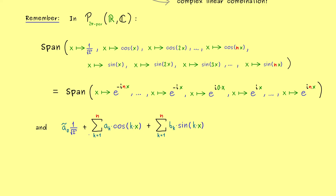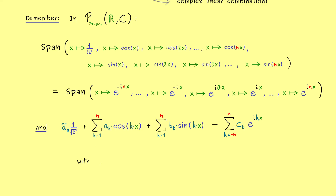In addition, we can say even more — namely how the coefficients transform. On the left we have the coefficients as in the first span, and on the right we write it for the second span. There it's much easier because we only need to write one sum, where k goes from minus n to n. It's important to note that we also have exactly 2n plus 1 terms. The coefficients we use for the exponential functions are usually called ck, where k is in the power of the exponential function.